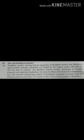Now open your docket, question number five: How did Buddhism decline? The answer is: Buddhism steadily declined due to the separation of Buddhist monks, and Hinduism again became stronger. Hinduism was helped by the higher castes who did not like the idea of equality. The Buddhist monks became interested in worldly pleasures and neglected meditation. Invasion by Huns, who found the monasteries rich with treasure, reduced the number of Buddhists. Invasion of north India by Muslim armies in the early 13th century further reduced the number of Buddhists.